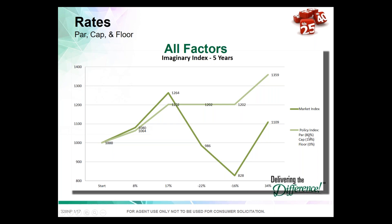This is the general idea of what makes index UL so interesting. Even though the underlying market over this period went up and down, over a five-year period it was only up 10.1% because of the ups and downs.